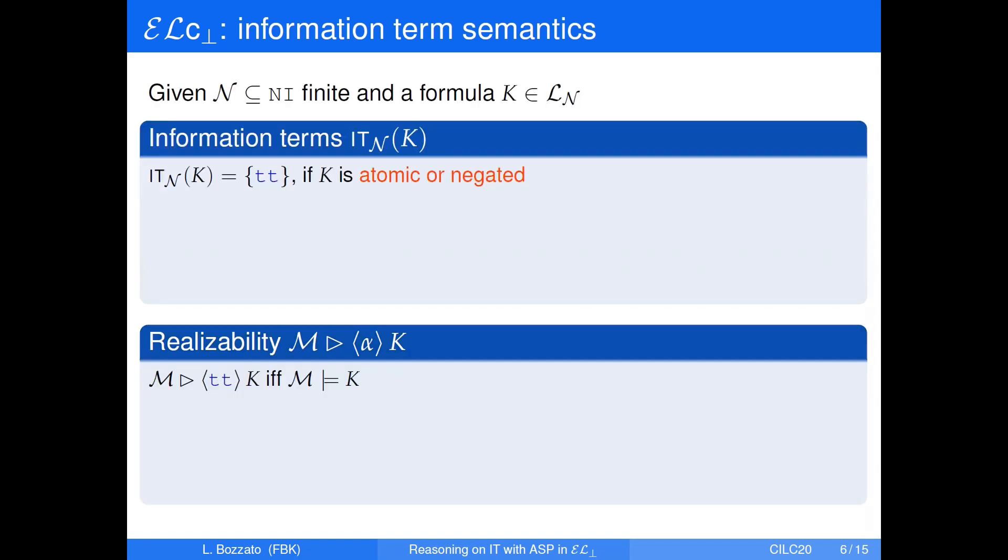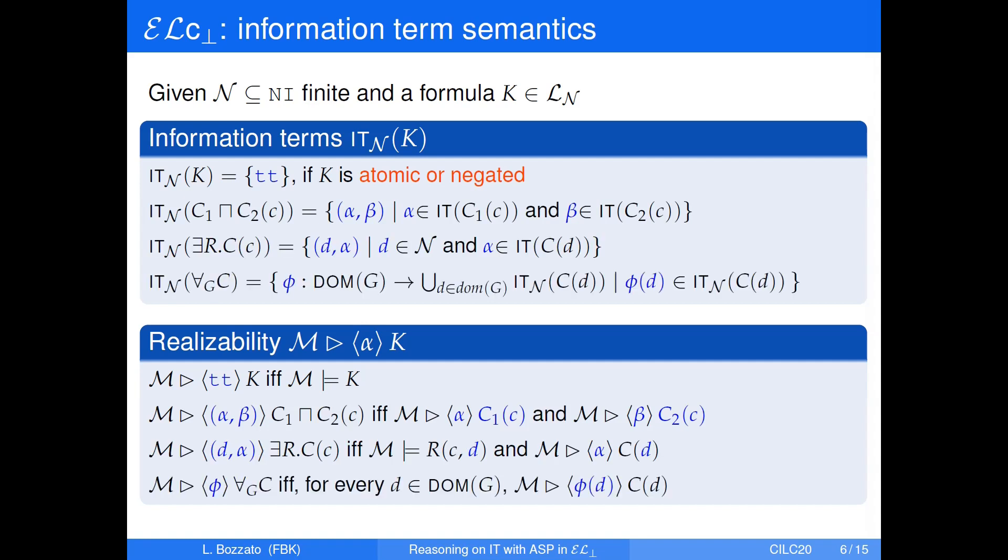Intuitively, information terms are syntactical objects that justify the classical truth of a formula, and we consider a relation that defines the truth of a formula justified by a given information term. Here is the formal definition of the information term semantics for EL bottom. For example, you can see that an information term for an existential formula provides a witness element that verifies the existential and then intuitively provides an information term for the subformula. In a classical model, this is realized if there is actually the relation with the element D and the subformula is realized.